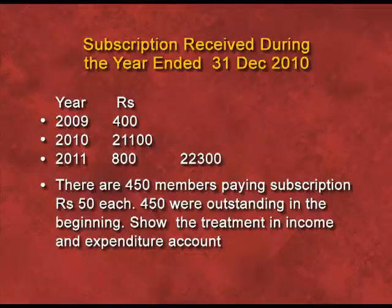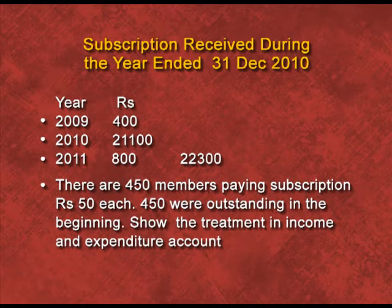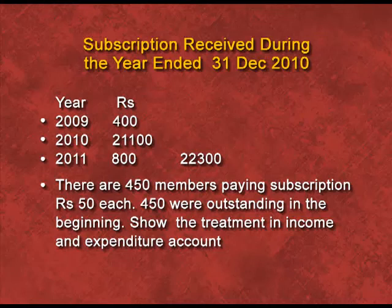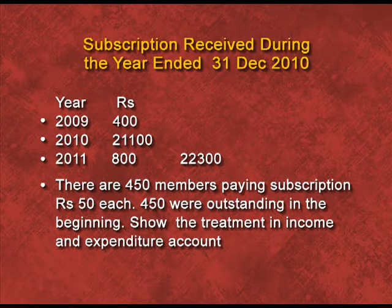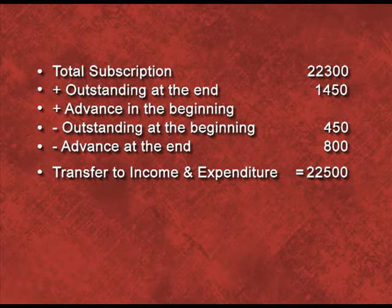Now there is a question based on subscription. This receipt and payment account is given. The current year is 2010, the previous one is 2009, and the next year is 2011. Subscription received for 2009 is rupees 400, for 2010 rupees 21100, and for 2011 rupees 800 — total subscription received is rupees 22300. Additional information: there are 450 members paying subscription rupees 50 each, and rupees 450 were outstanding at the beginning of the year.